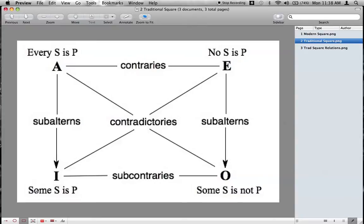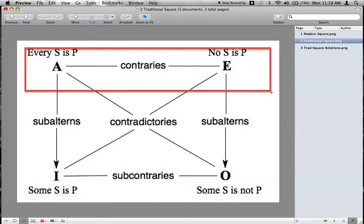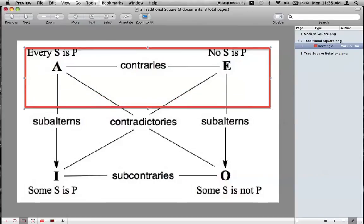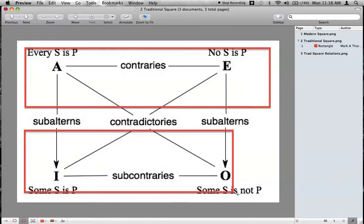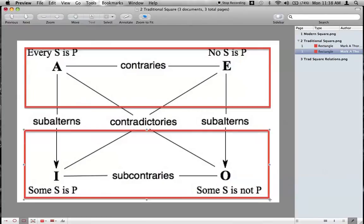Now, let me just say a little bit about this. One thing you should keep in mind is that up here, what we see, these are the universals, whereas down here, these are the particular propositions.